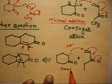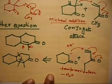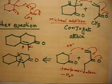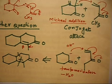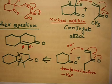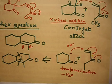Then tautomerization and loss of water give the final product. In this problem we have made a ring and attached another ring to it — this kind of reaction is called a cyclization reaction, and more specifically it is called Robinson annulation. So Robinson annulation involves attaching a ring to a ring, generally through a Michael addition (conjugate addition) followed by an aldol-type reaction. The total process — Michael addition followed by aldol condensation — is called Robinson annulation.